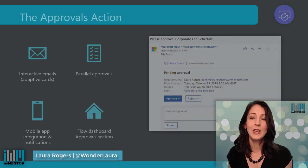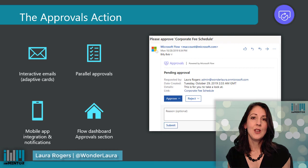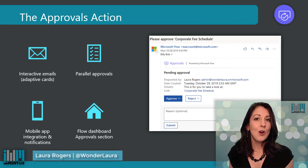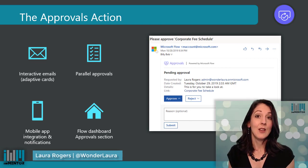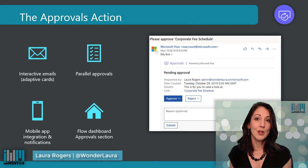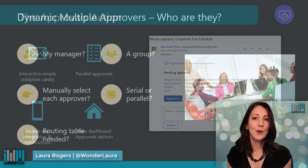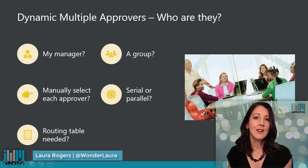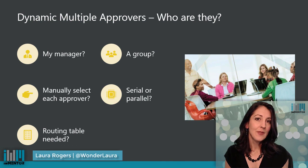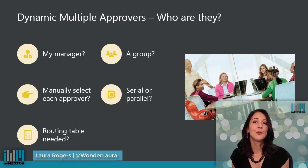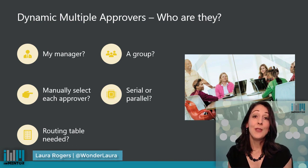That can get a little tricky, so it helps to really know what you're working with — to know what's involved in out-of-the-box things like the approvals action in Flow, what it gives you and what it doesn't. It's also important to think about your processes and what's involved in them, because that will determine what the best technology is going to be that you'll need to use.